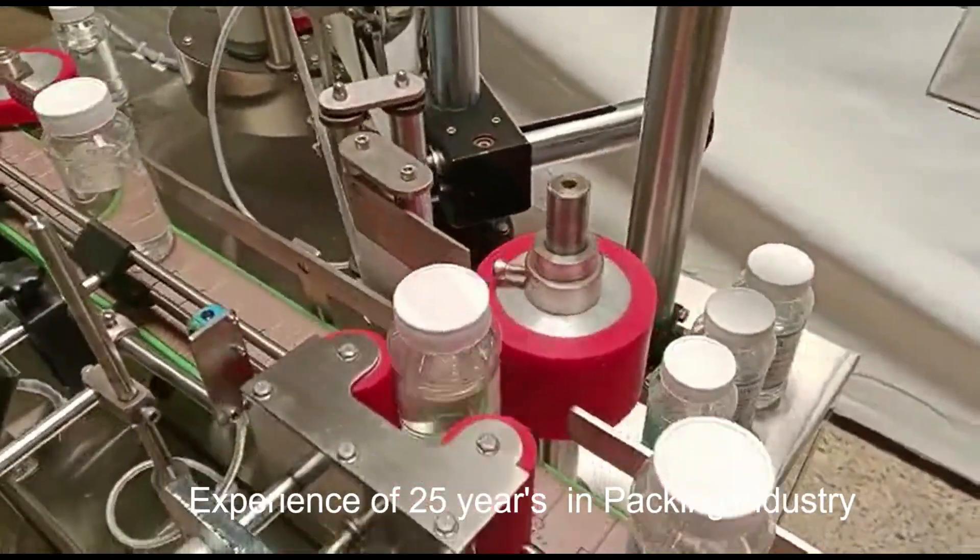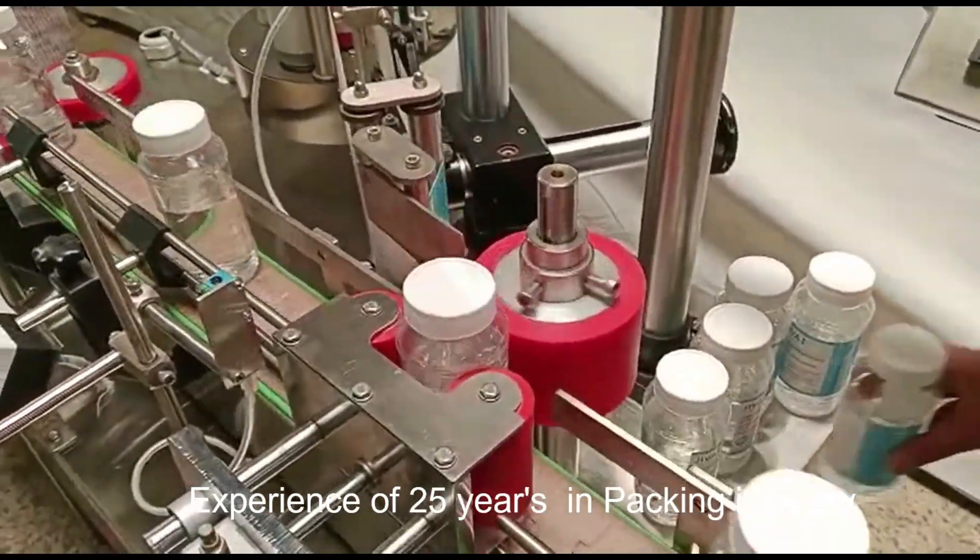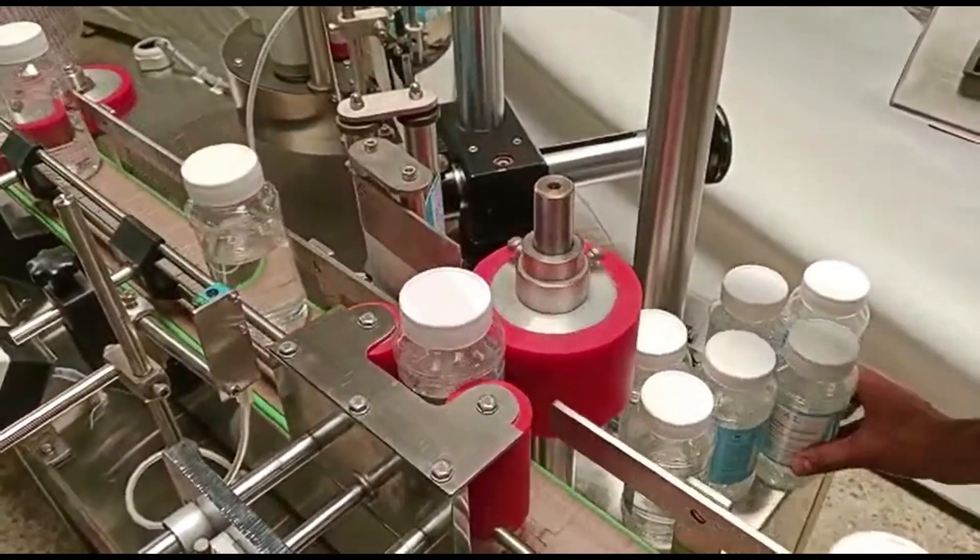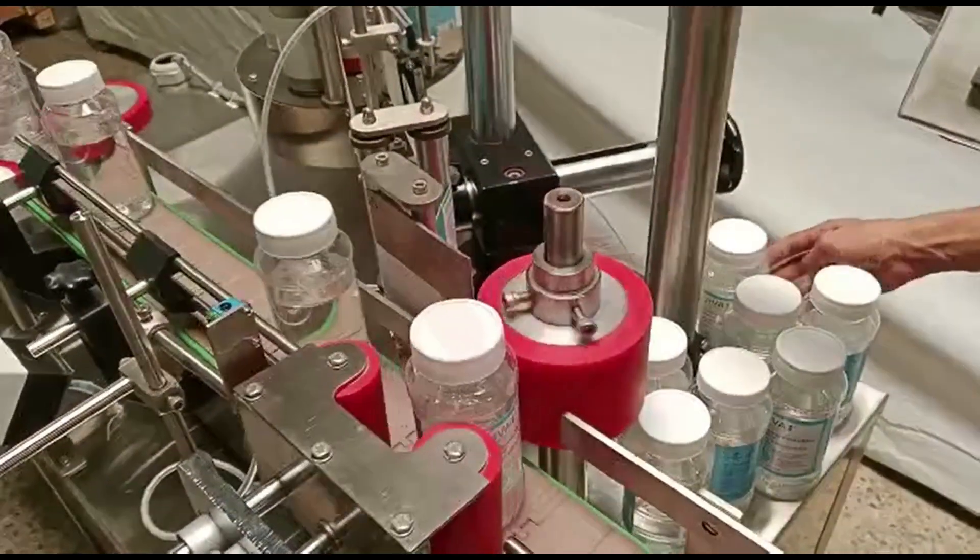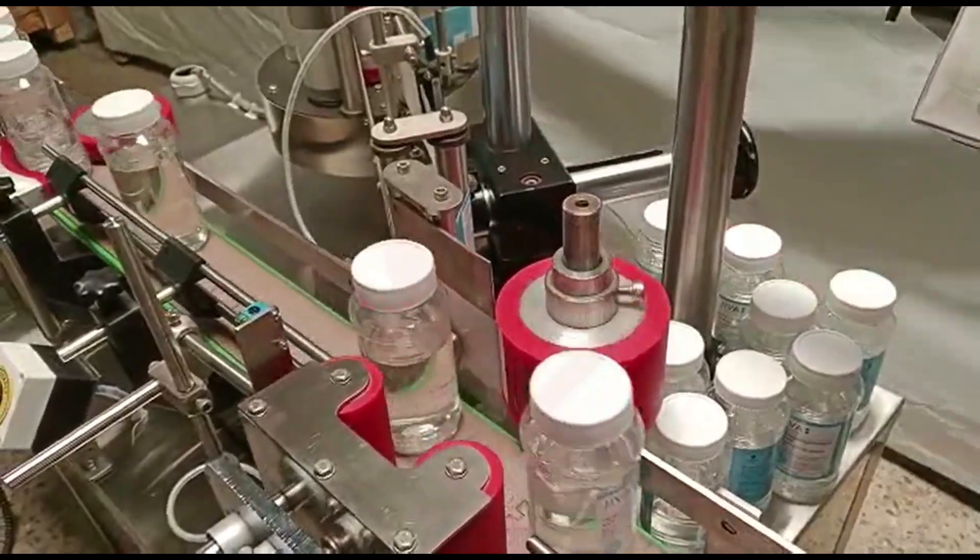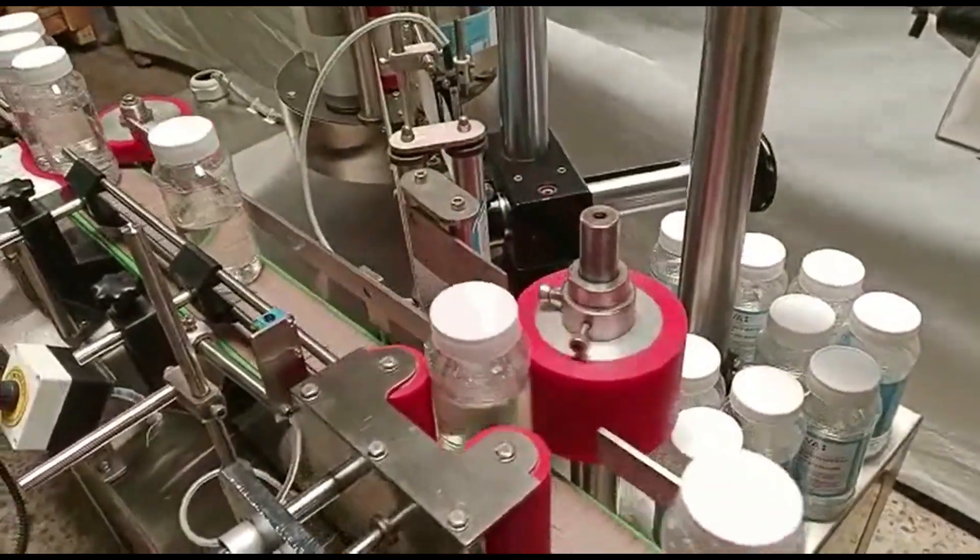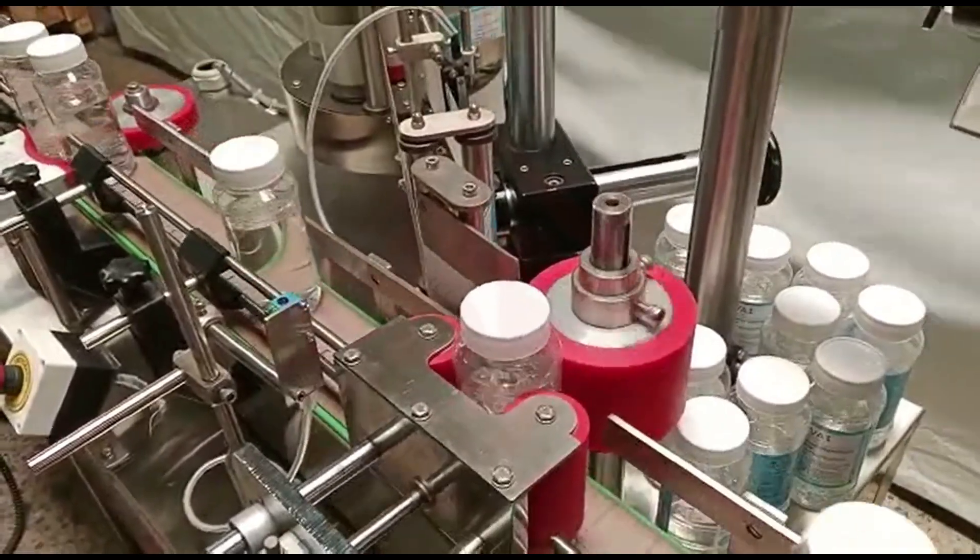Labeling Mechanism: The labeling mechanism includes a label roll holder, which holds a roll of labels, and a dispensing system. The labels are usually made of adhesive material and can be pre-printed with product information, barcodes, or branding.